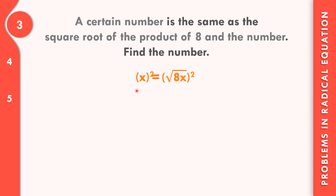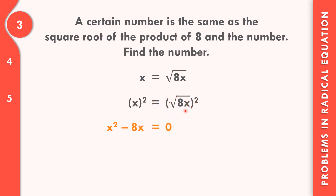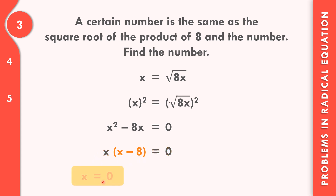Let us find the number. Let us square both sides. x times x is x squared. Square root of 8x — cancel the 2 and the radical sign — that becomes 8x. Going to the left side, we need to change the sign. So x squared minus 8x is equal to 0. To find the value of x, we factor out the common factor x. x squared divided by x is x; negative 8x divided by x is negative 8. So x times (x minus 8) equals 0. Using the zero product property, x is equal to 0, and x minus 8 equals 0, so x is equal to 8. The numbers are 0 and 8.